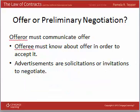The offeror must actually communicate the offer — the offeree must know about it in order to accept it. Consider this example: a family's pet turtle escapes and they post a sign offering fifty dollars for its safe return. A neighbor returns the turtle but never saw the sign. That neighbor cannot claim the fifty dollars, because if they had no knowledge of the offer, they are ineligible to accept it. The law requires that the offeree know of the offer's existence for there to be a valid power of acceptance.